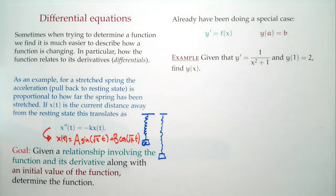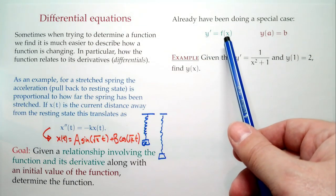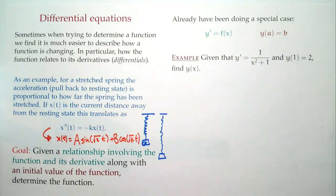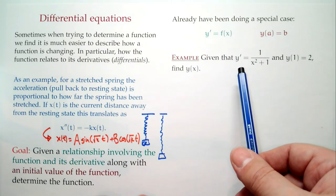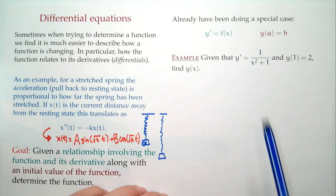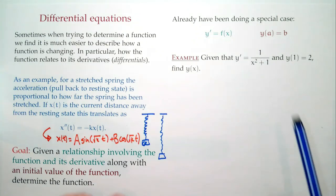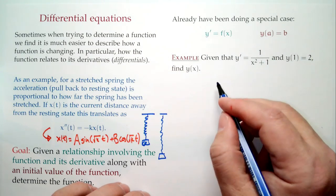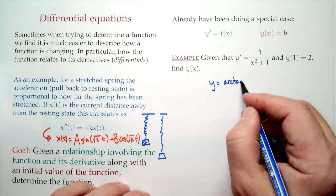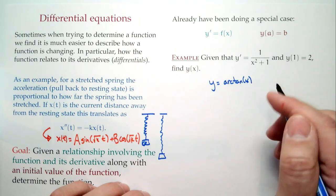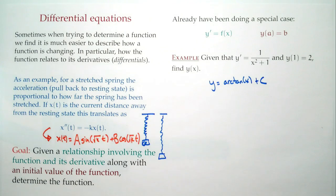There is one special case we've already solved: suppose y' = f(x) and we have information about the value of the function at a particular point. We solved that when we talked about antiderivatives. For example, if y' = 1/(x² + 1), we take the antiderivative: arc tangent of x plus c. So if y' = 1/(1 + x²), then y must have the form arctan(x) + c.